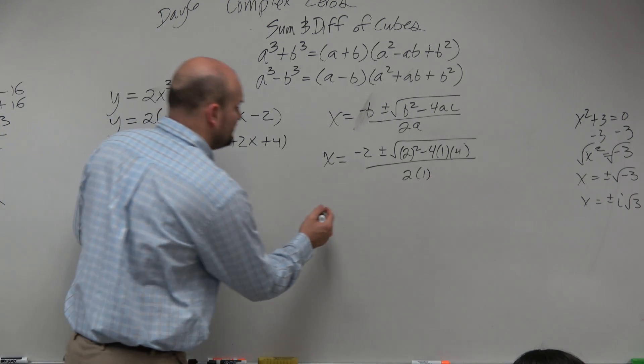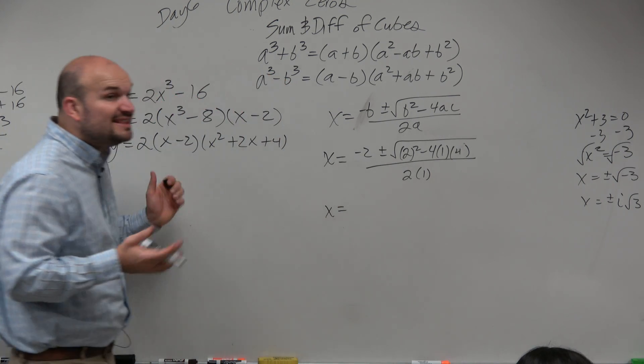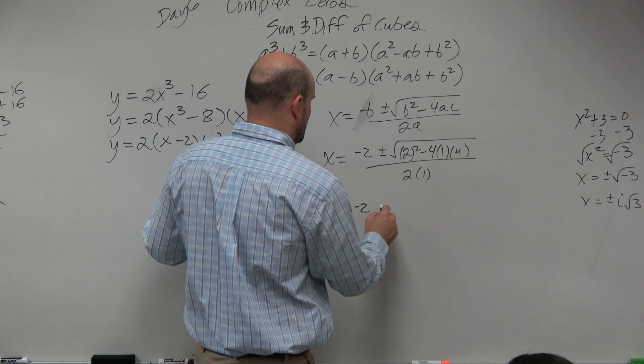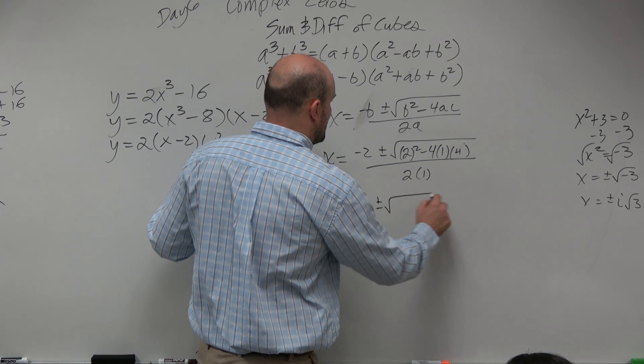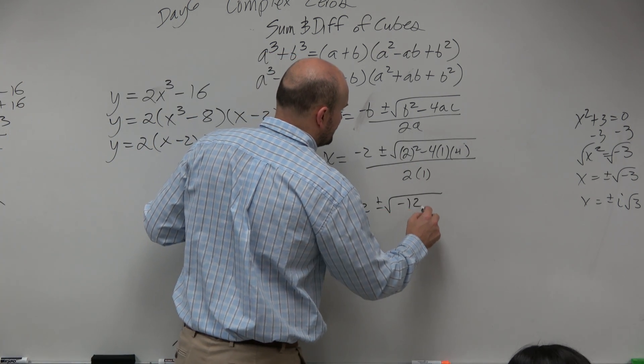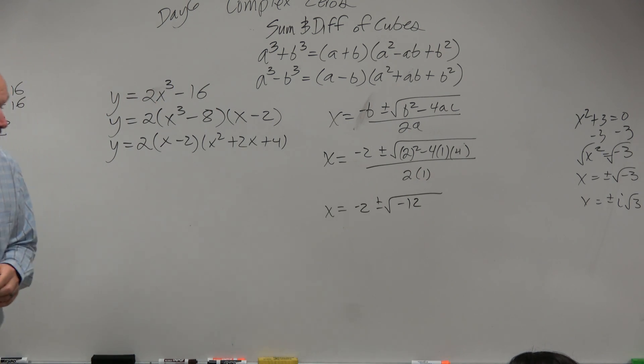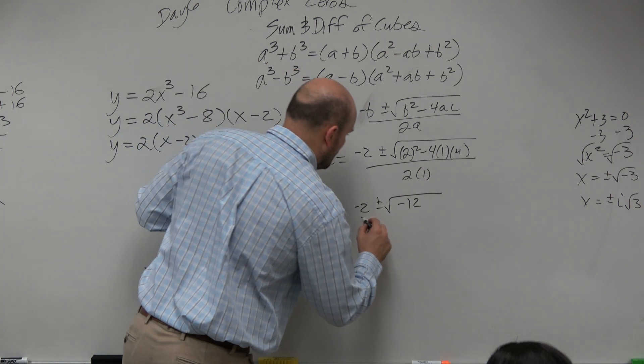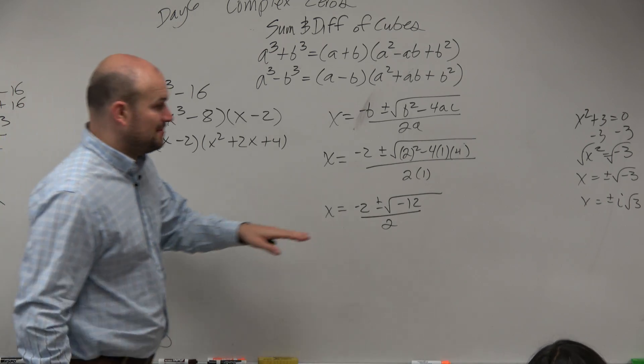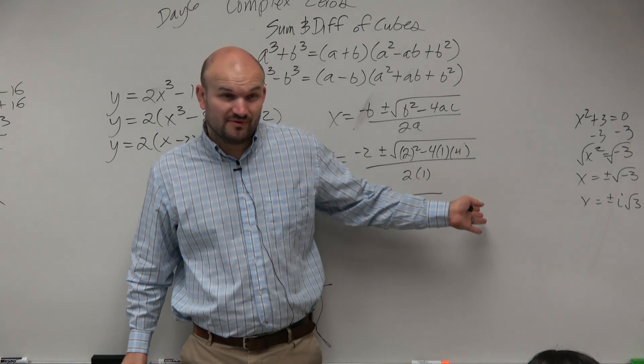So now let's just go ahead and simplify, because again, the question is saying, find the 0's, right? So x is equal to negative 2, plus or minus the square root of 2 squared is 4, minus 16, which is negative 12. 4 minus 16, negative 12, all over 2. All right, so we need to go back and remember how to simplify radicals. I'm going to kind of draw a little box here.